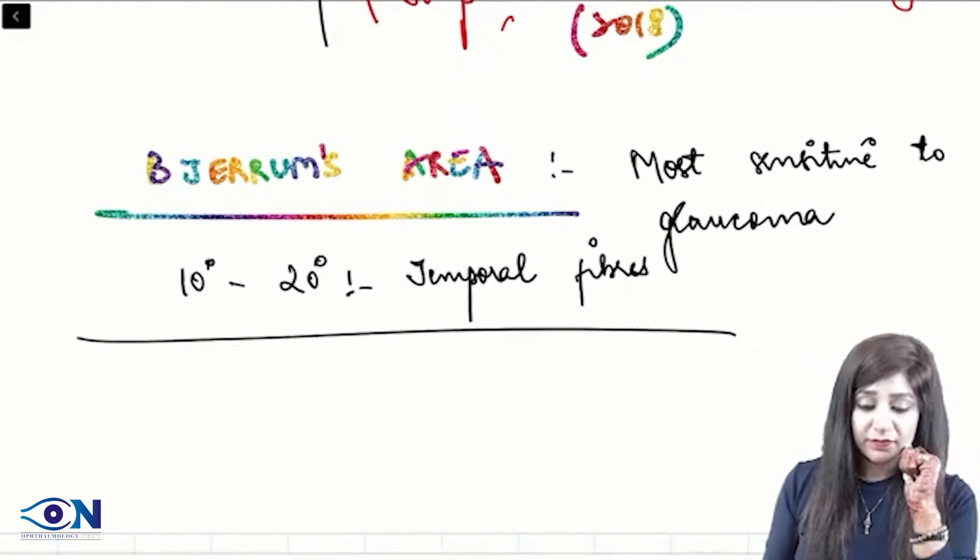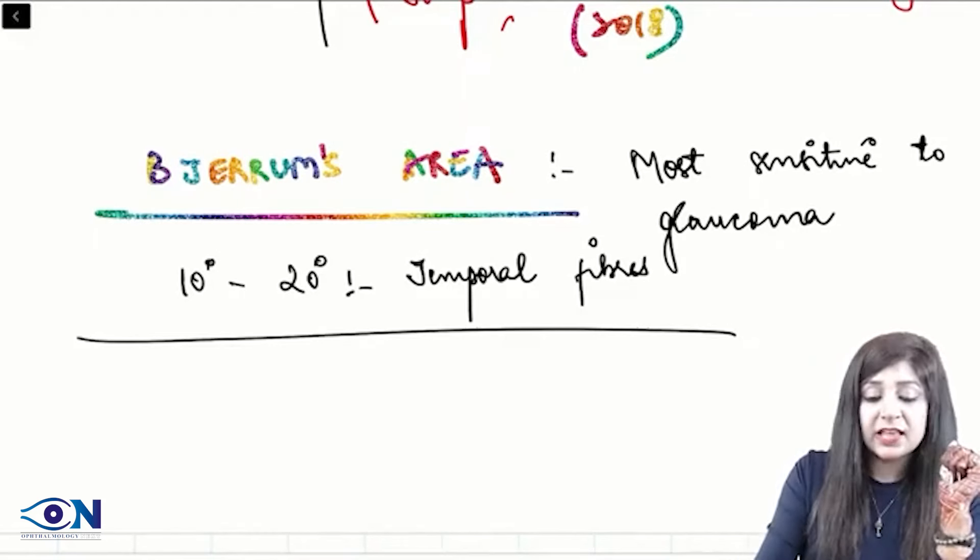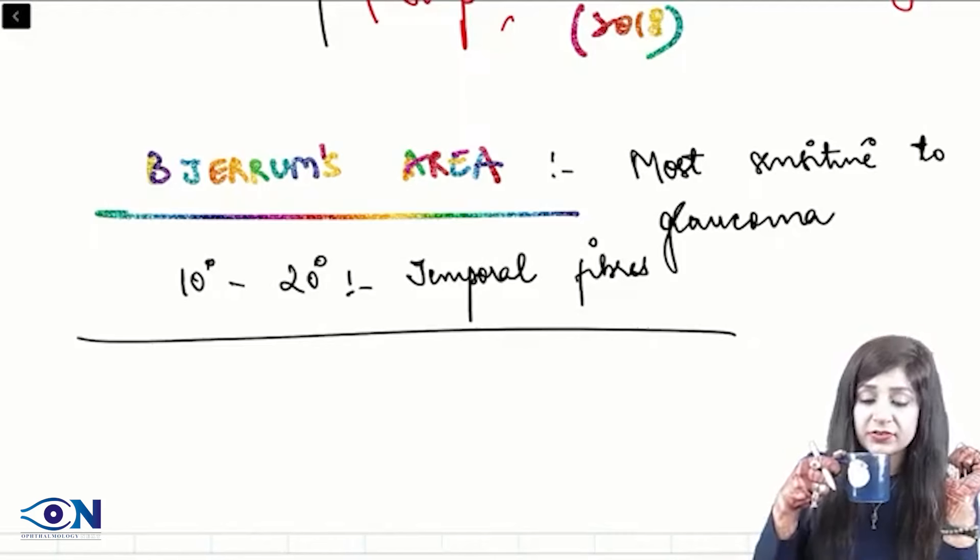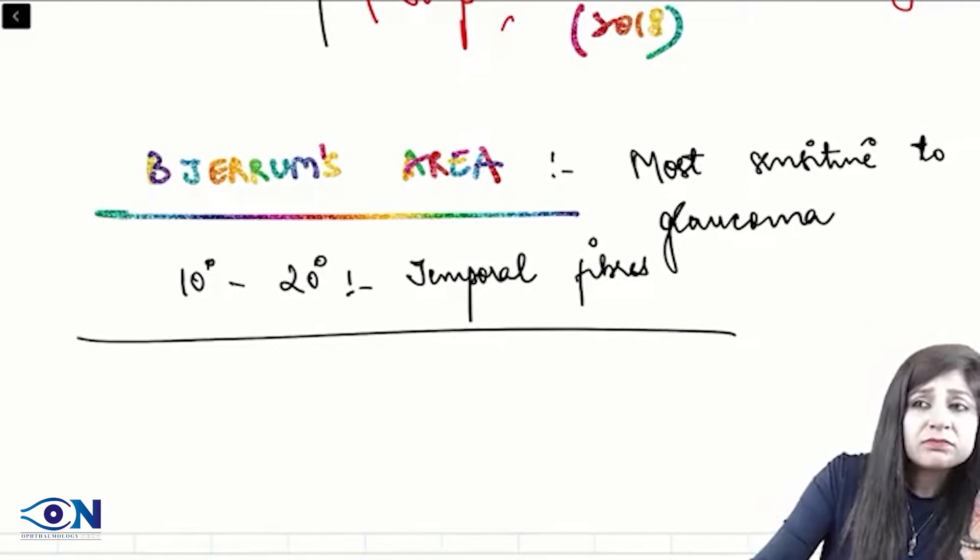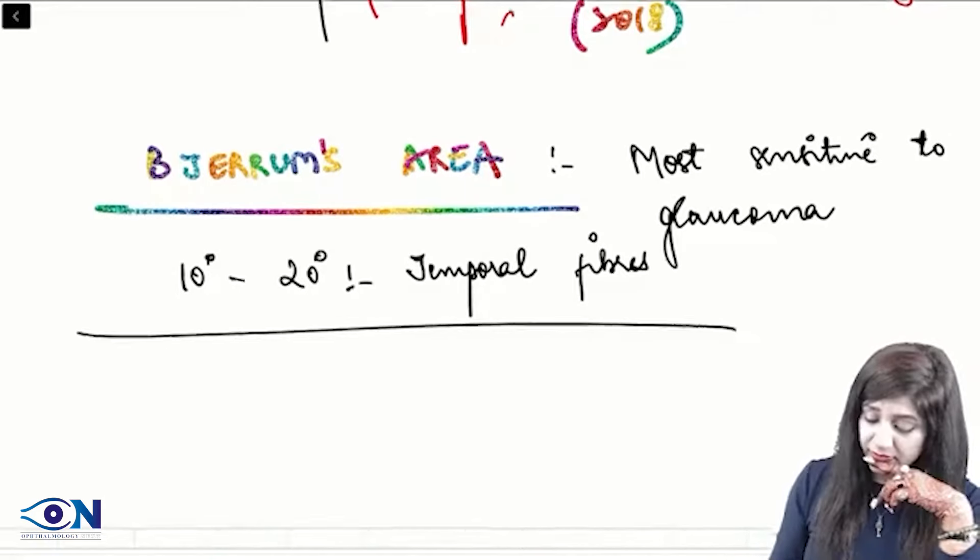So, I hope you have understood. Yes, scleromalacia perforans in rheumatoid arthritis. It can be a type of scleritis which is common in the rheumatoid arthritis.